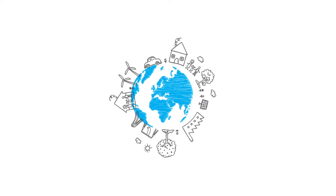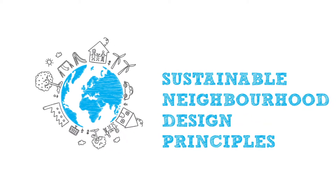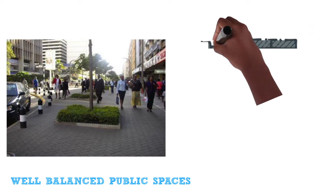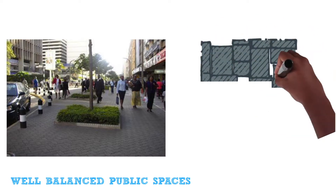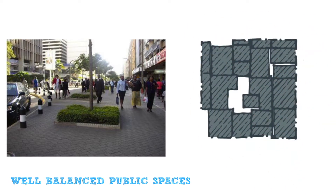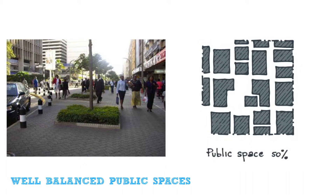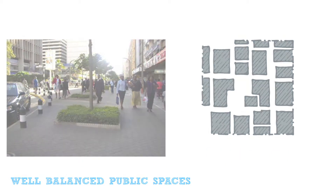Here are some important sustainable design strategies to consider when designing neighborhoods. Provide adequate public space: 50% of space should be allocated to public spaces such as streets, roads, gardens and parks. This supports a vibrant street life, reduces congestion and encourages people to walk.